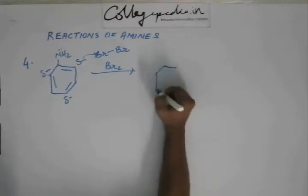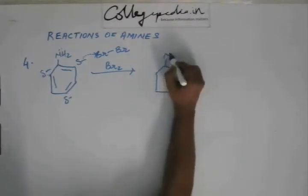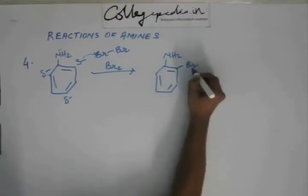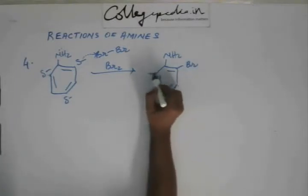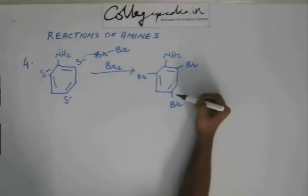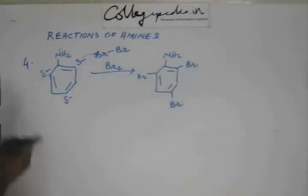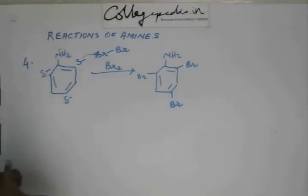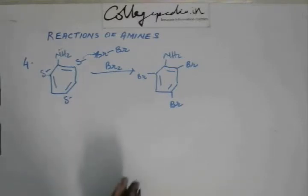So the final product is 2,4,6-tribromoaniline. All three positions — 2, 4, and 6 — have sufficient negative charge polarity, and the reaction occurs from all three positions. Bromine is attached at all three positions. So when you react aniline with bromine, you will have 2,4,6-tribromoaniline as the product.